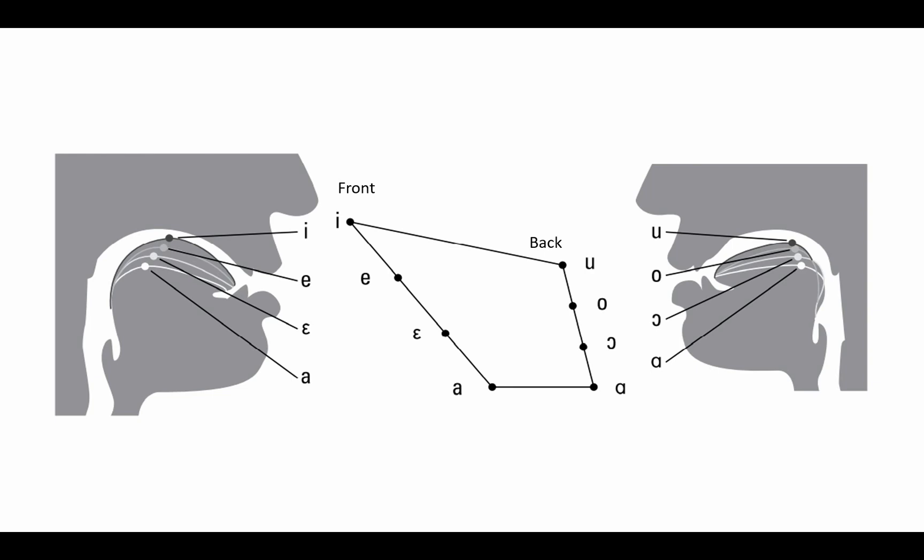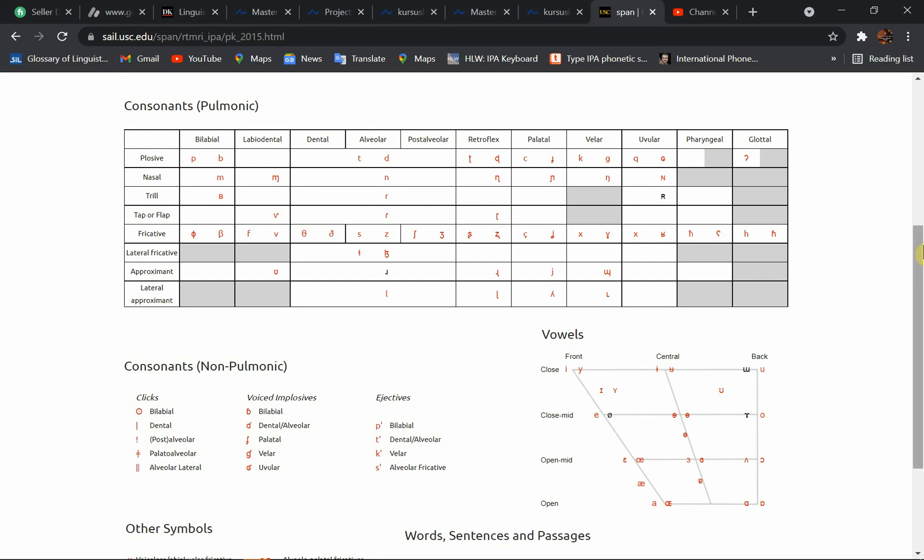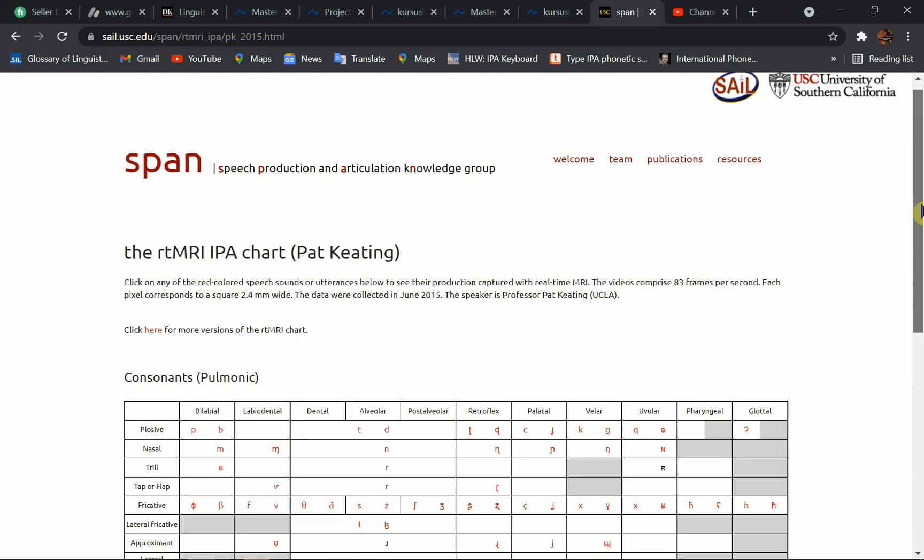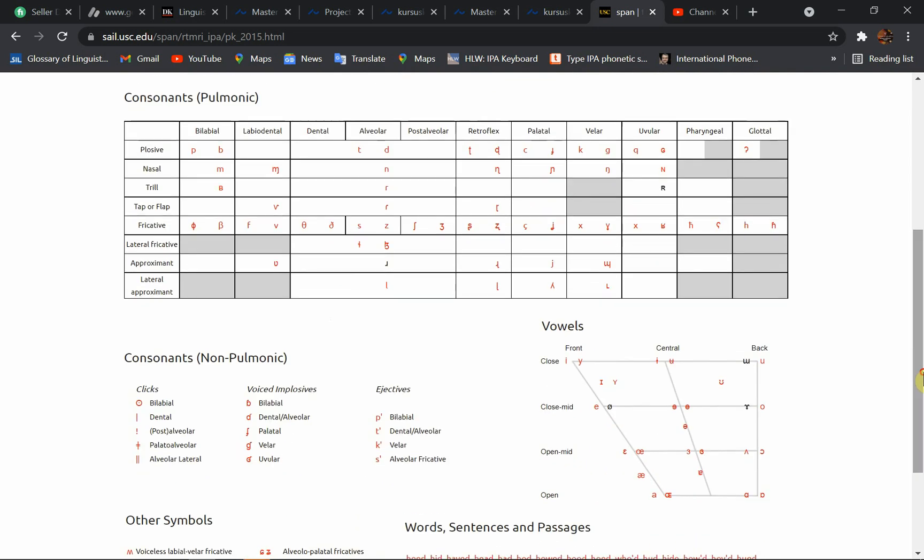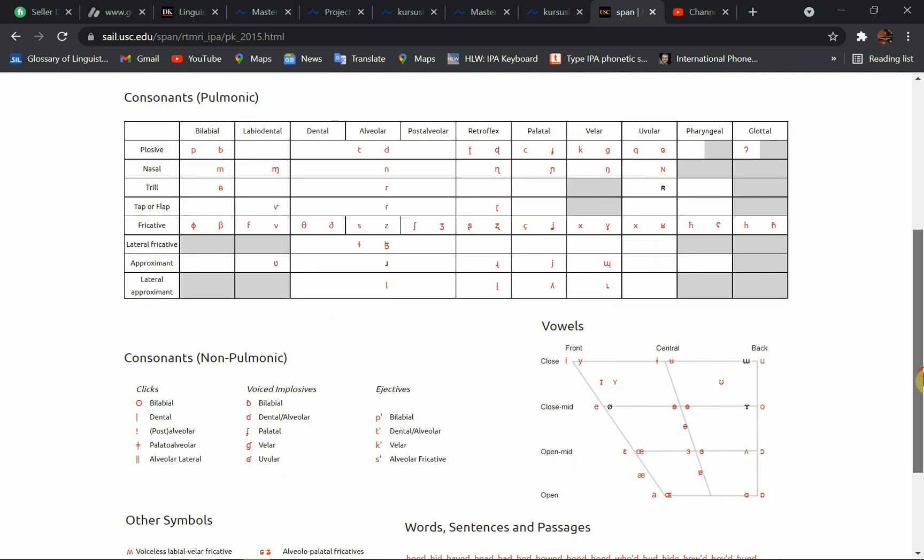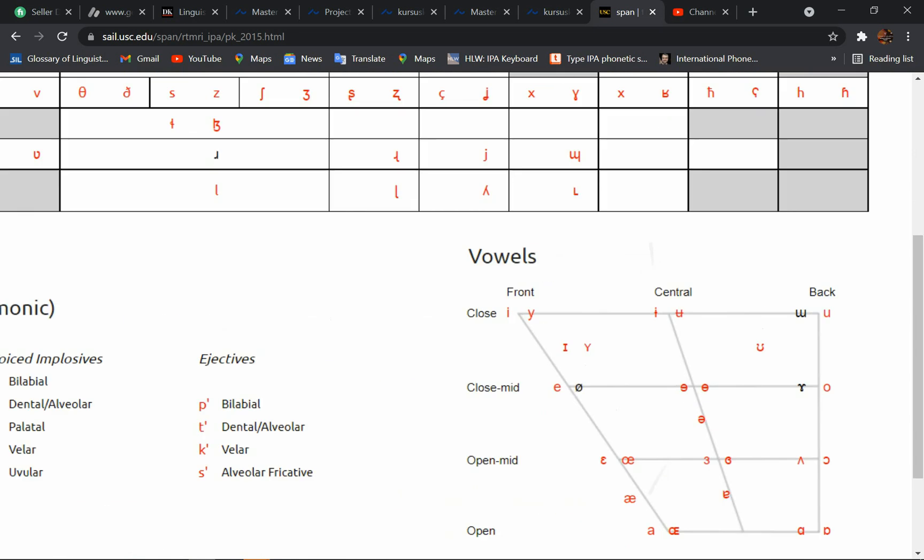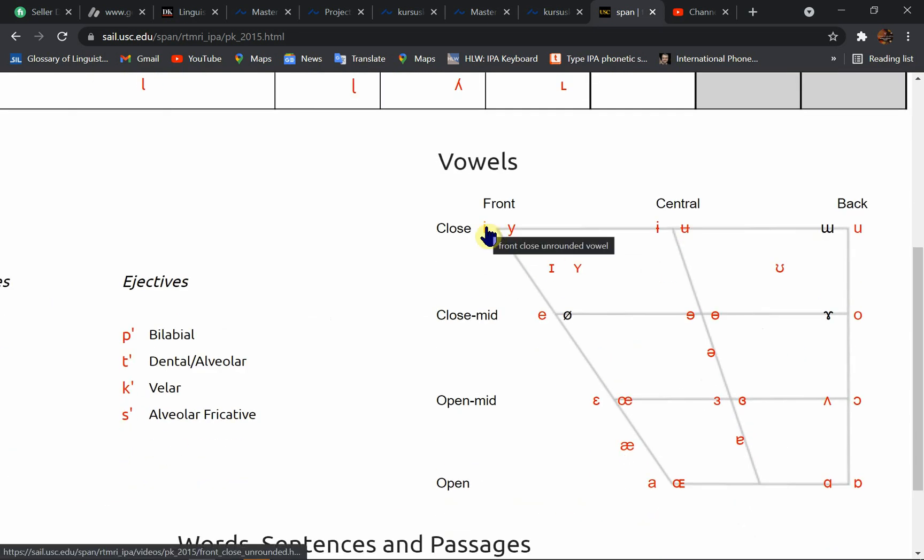Let me show you two websites which will be helpful to understand this position like mid, low, back, etc. This website is span or sail.usc. It was designed by University of Southern California. And in this, all the sounds are recorded in MRI, magnetic resonance imaging. For example, we were discussing this front vowel E. Now, if I click on this.